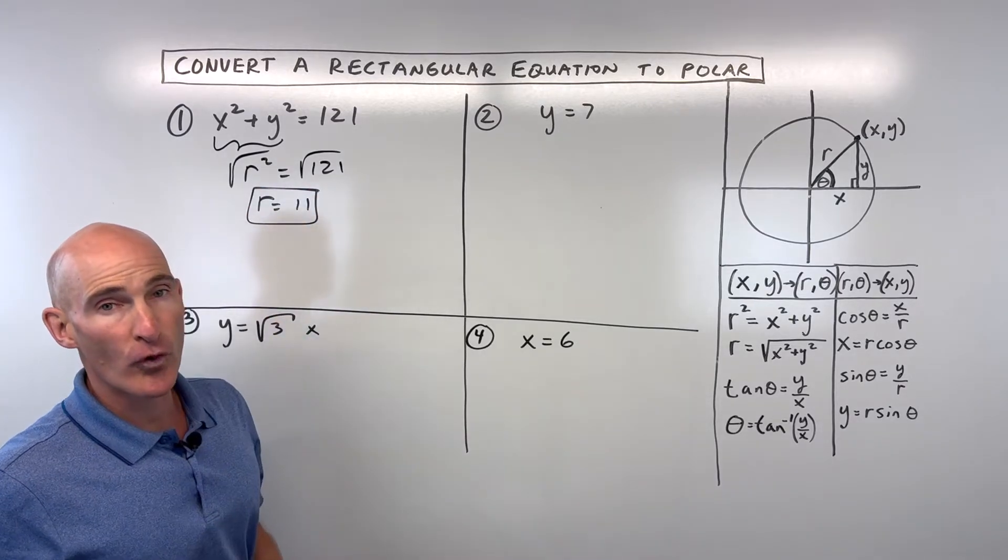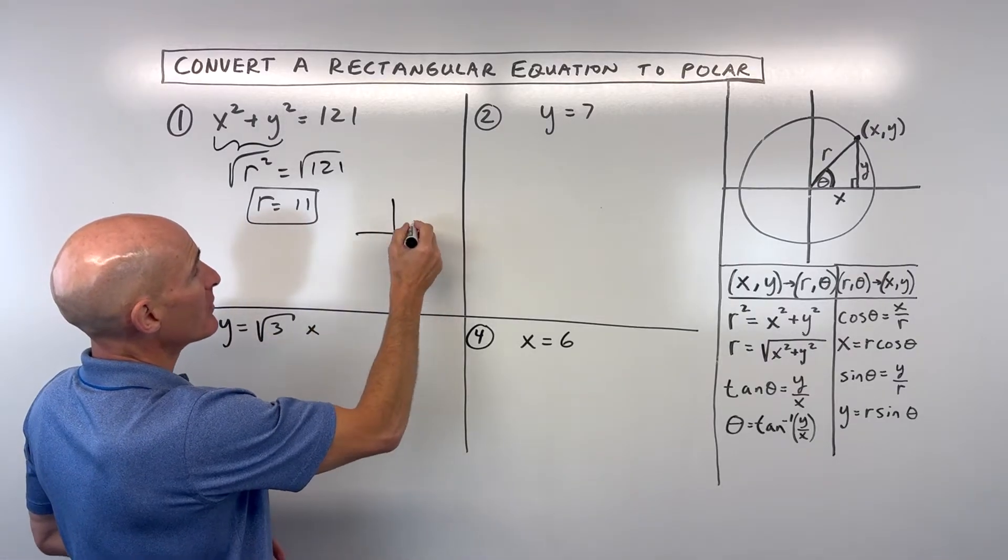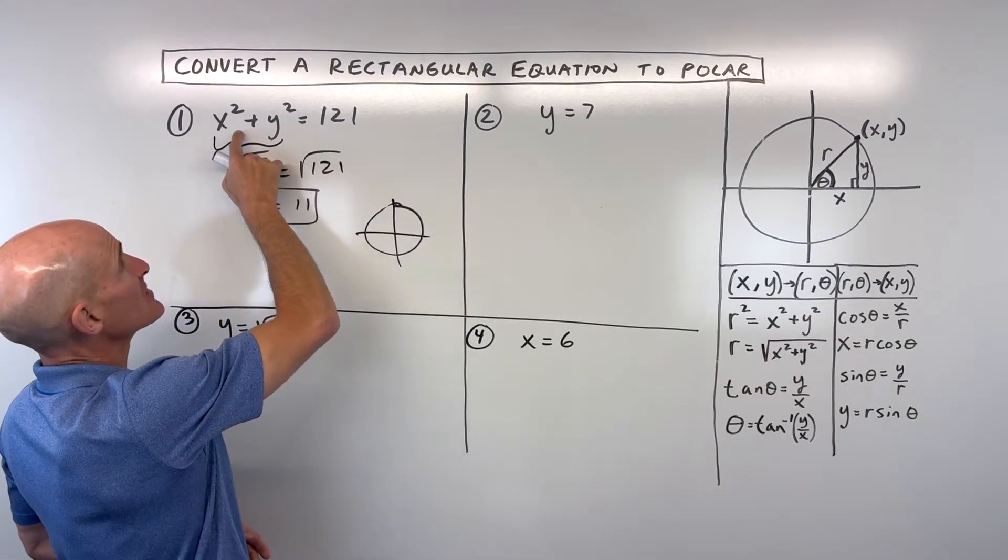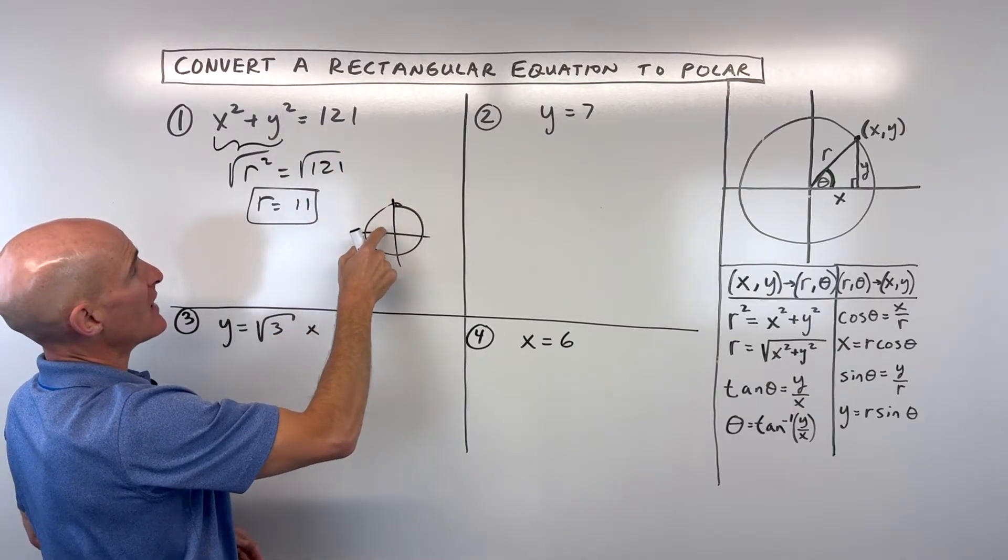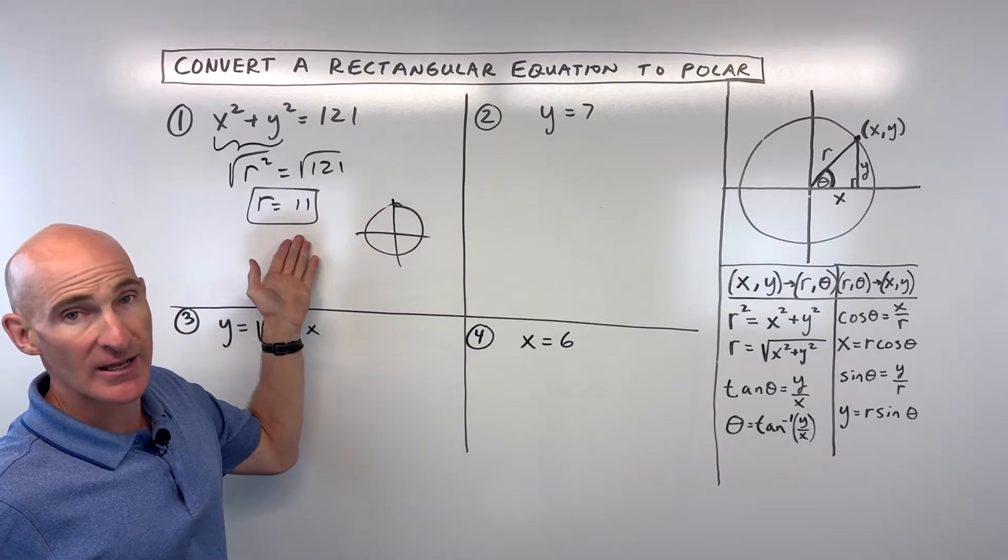r is equal to 11. And so really, in polar form, r equals 11 is a circle with radius 11. This is also the equation of a circle with radius 11. You can see the polar form is a little bit simpler, a little bit easier, a little bit more condensed way of writing it.